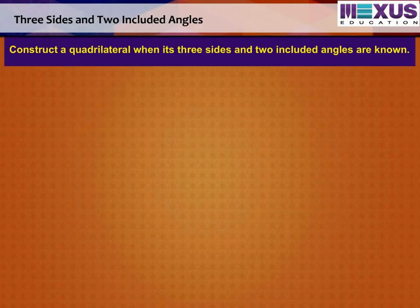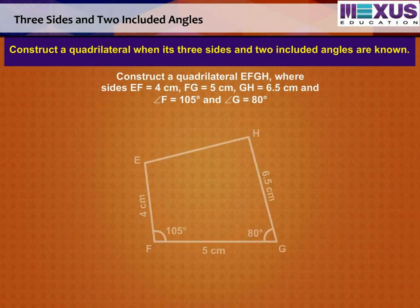Let us now learn how to construct a quadrilateral when its three sides and two included angles are known. To construct a quadrilateral EFGH where sides EF is equal to 4 cm, FG is equal to 5 cm, GH is equal to 6.5 cm, angle F is equal to 105 degrees, and angle G is equal to 80 degrees.